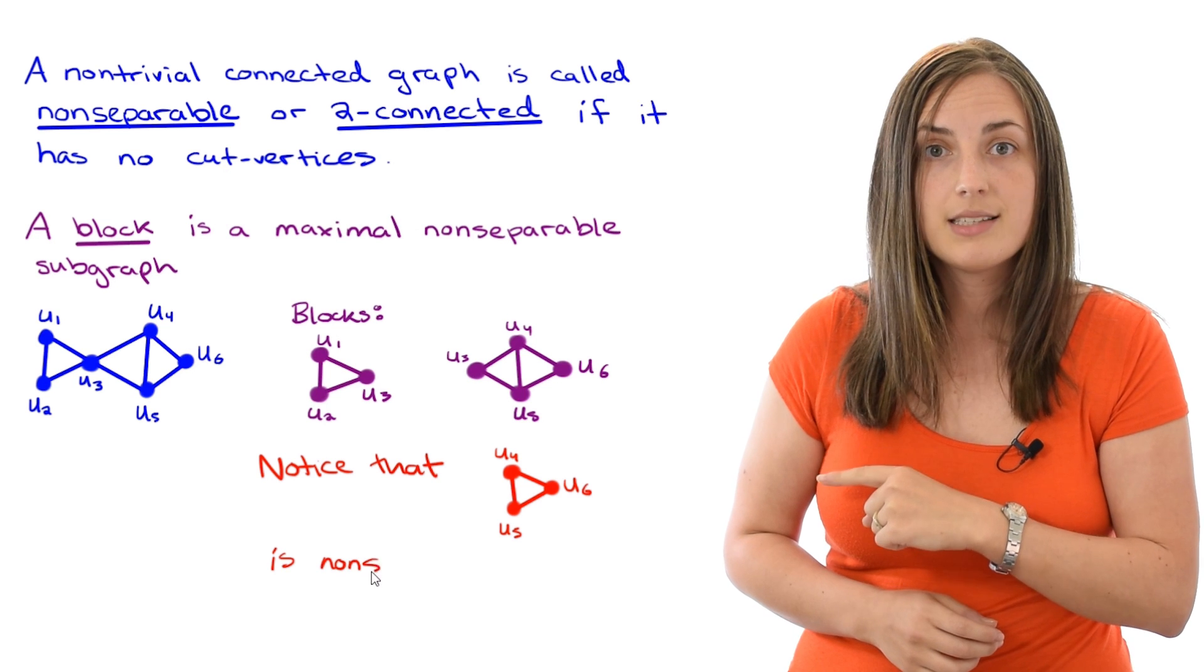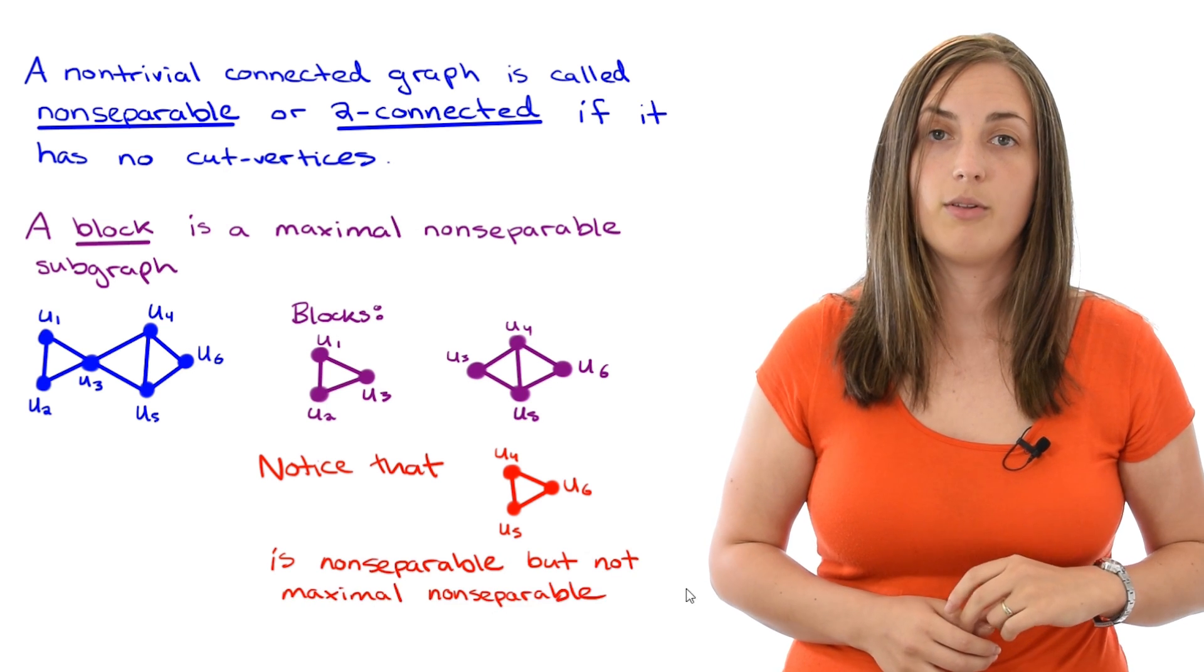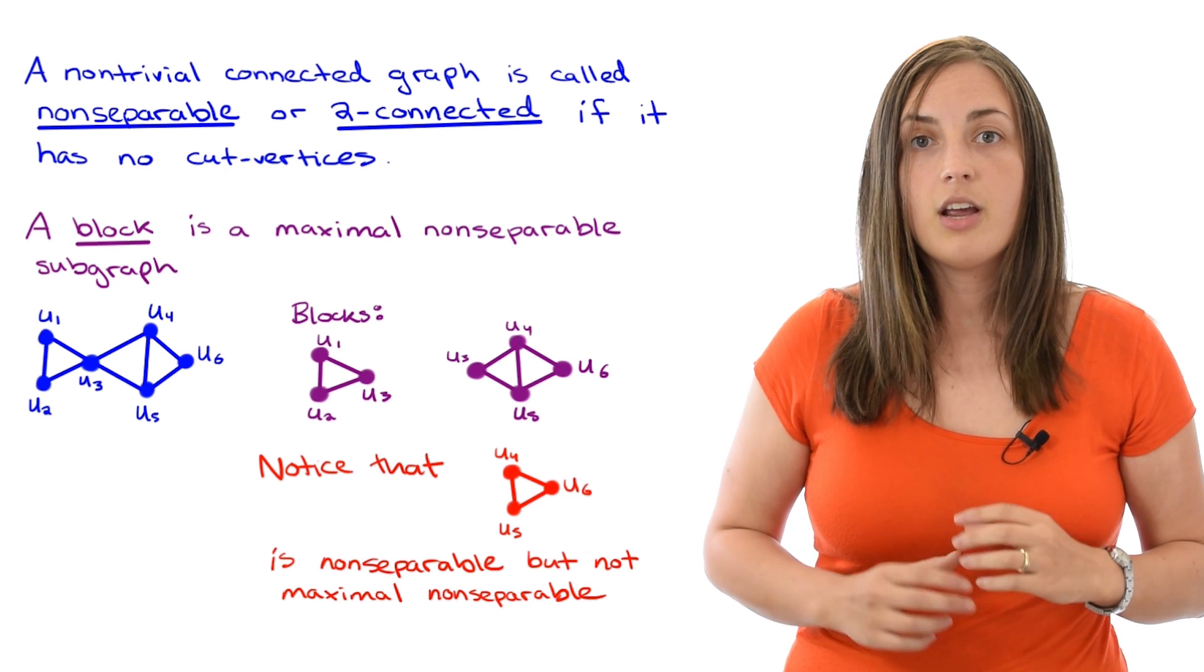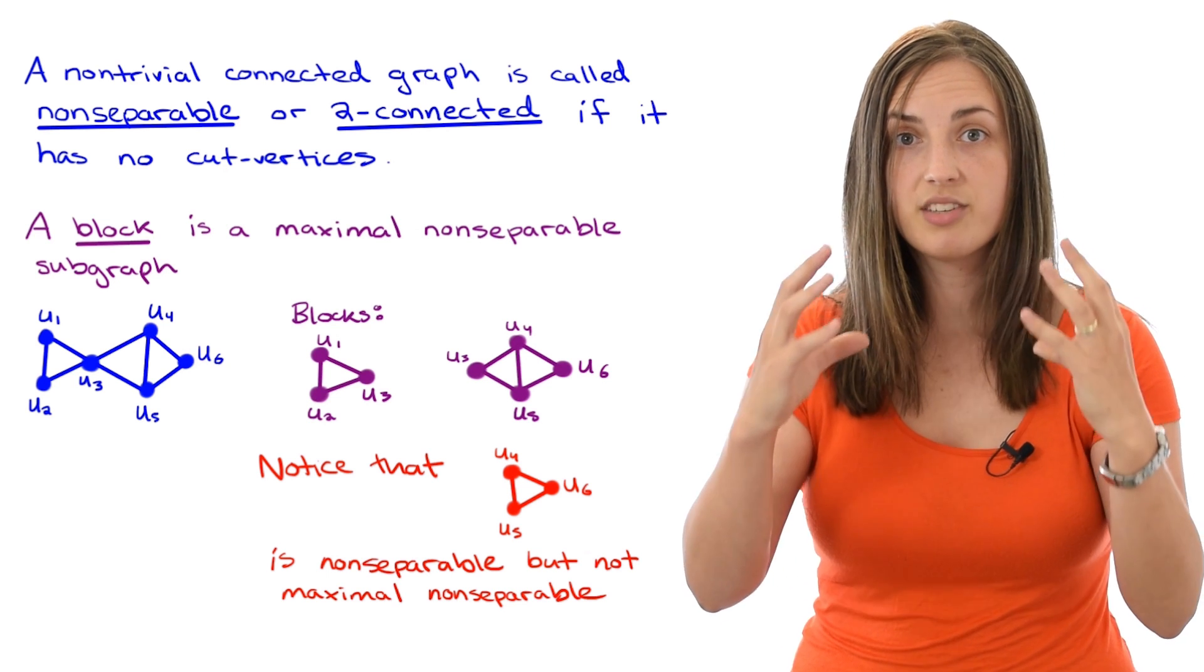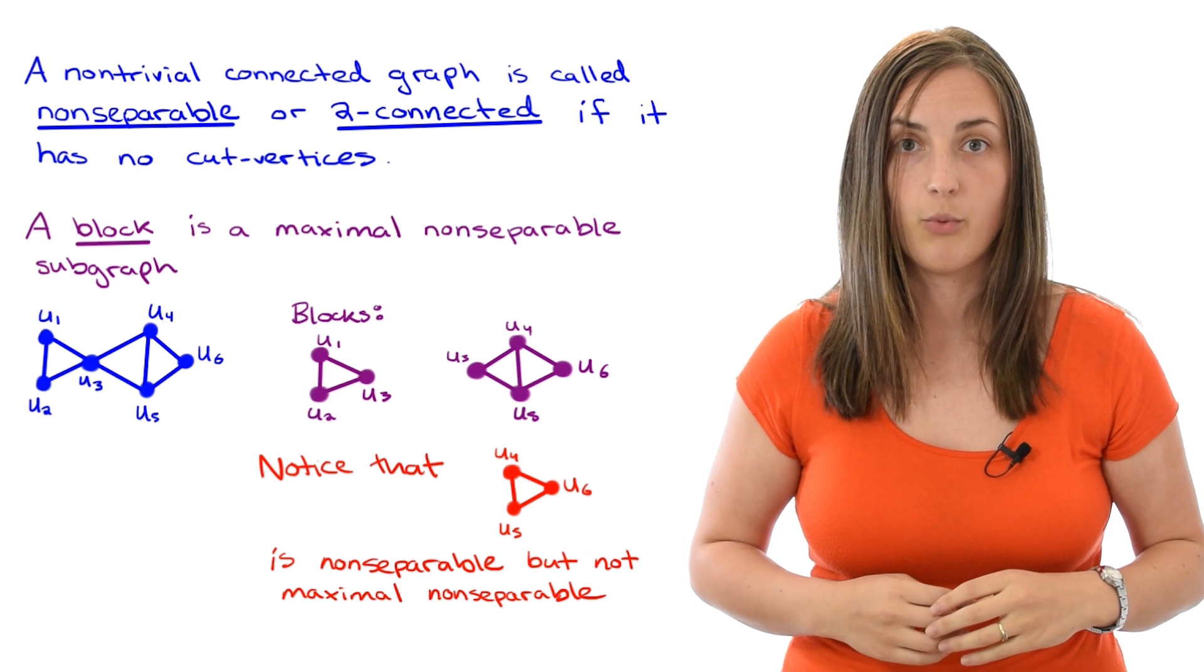notice that this graph in red is a subgraph of the graph and it is non-separable, but it's not a block. The reason is because even though it's non-separable, it's not maximally non-separable. So it's important to keep in mind that when you're looking for a block, you want to fill in as much of the subgraph as you can until you reach a cut vertex and then it's no longer going to work out as a block.